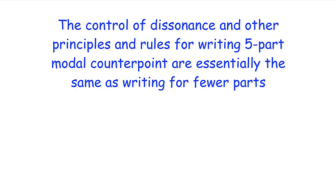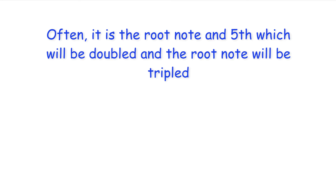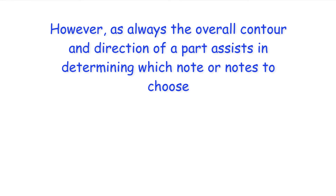Hi everyone. The control of dissonance and other principles and rules for writing five-part modal counterpoint are essentially the same as writing for fewer parts. To achieve a vertical five-part texture, however, two notes of a triad may be doubled or one note may be tripled. Often it is the root note and fifth which will be doubled and the root note will be tripled. As always, the overall contour and direction of a part assists in determining which note or notes to choose.